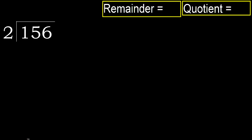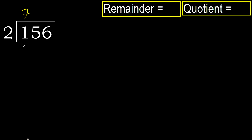156 divided by 2. 1 is less, therefore next. 15 is not less, therefore with 15: 2 multiplied by which number is nearest to 15 but not greater? 2 multiplied by 8 is 16 — 16 is greater. Multiply by 7: 14 is not greater.